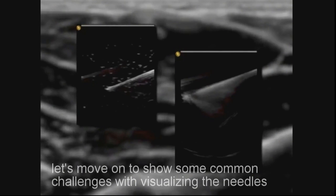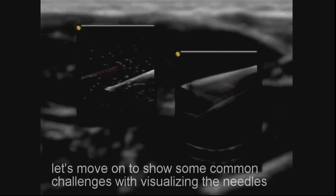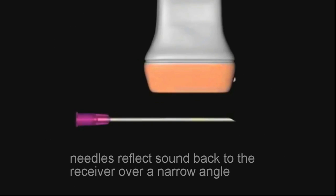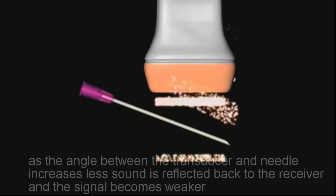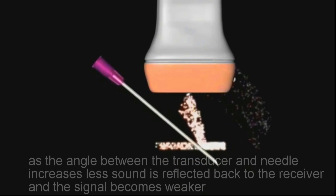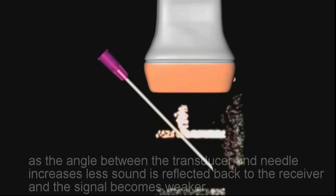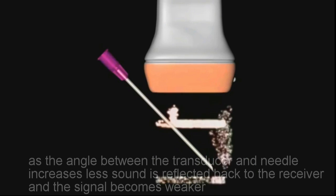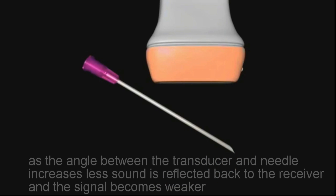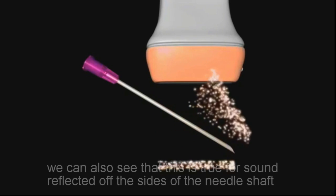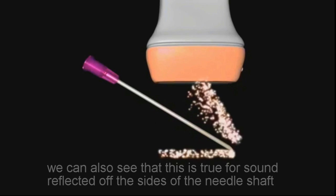Let's move on to show some common challenges with visualizing the needles. Needles reflect sound back to the receiver over a narrow angle. As the angle between the transducer and needle increases, less sound is reflected back to the receiver and the signal becomes weaker. We can also see that this is true for sound reflected off the sides of the needle shaft.